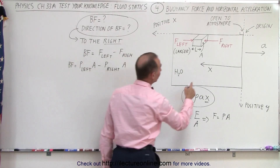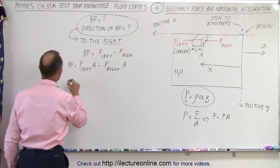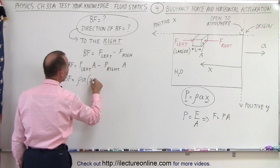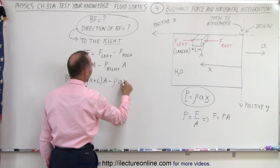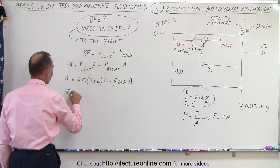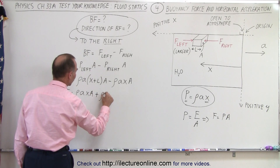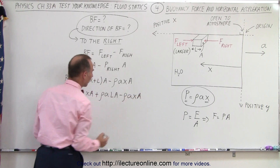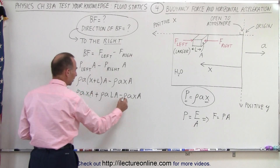The pressure on the left is the density times acceleration times (x plus L), where L is the length of the cube. So the buoyancy force equals the density times acceleration times (x + L) times the cross-sectional area A, minus the density times acceleration times x times A. Multiplying this out, the first and last terms are equal and opposite, so they cancel.